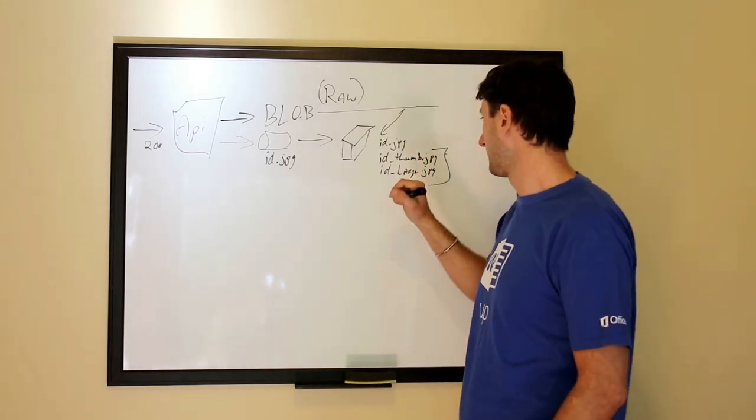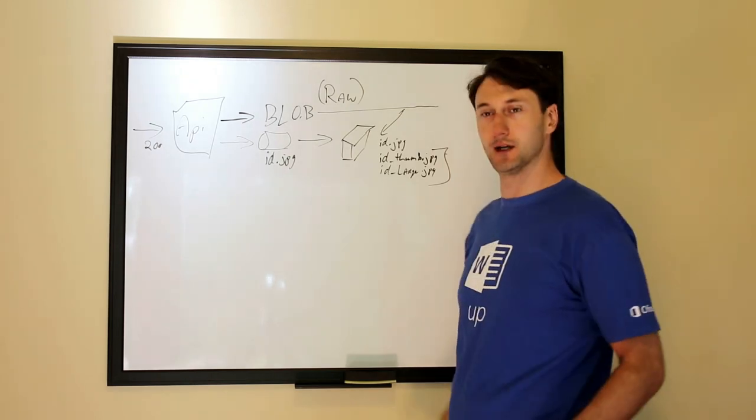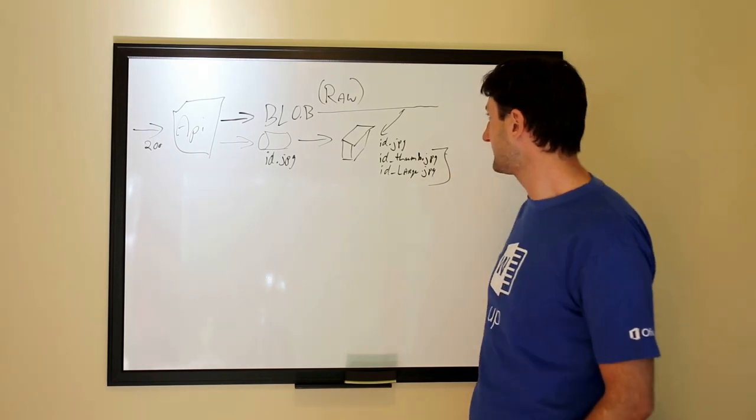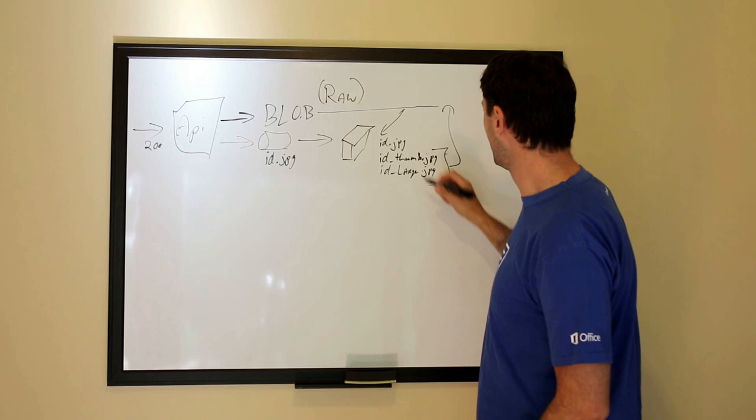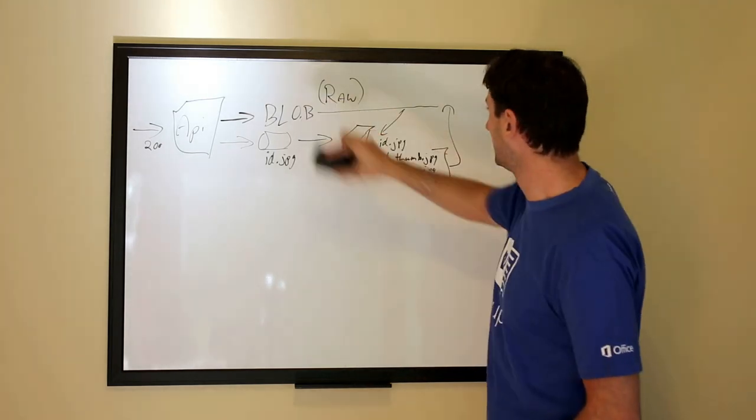And then these would be capped in terms of what your actual size ratios are there. The thumb could be a little square and the large could be the large representation with the maximum pixels that you're supporting on your site for that image. Now, the nice thing about this is these would just go right back in the blob and sit next to the original.